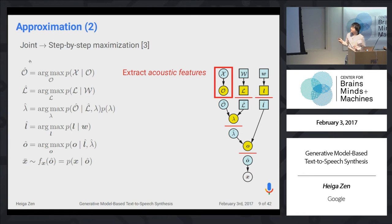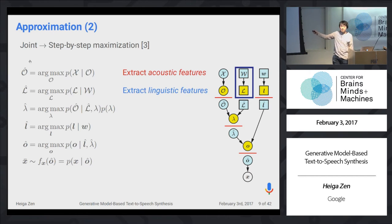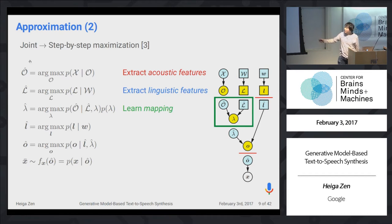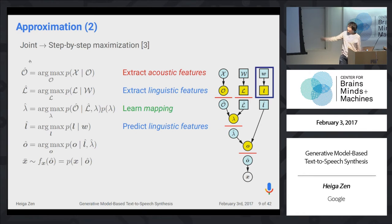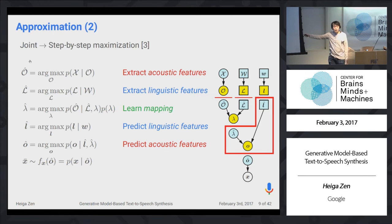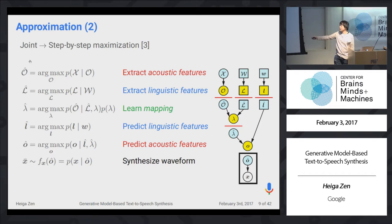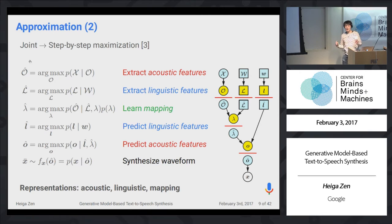So first we extract the most likely acoustic features, then extract the most likely linguistic features, then estimate the model parameters for the mapping between these two. Then we extract linguistic features from the text to be synthesized, predict the most likely acoustic features given the extracted linguistic information and trained model, and finally draw a sample from the predicted acoustic features.